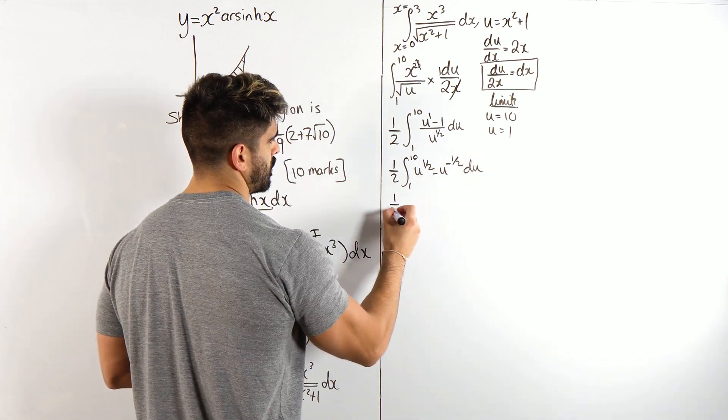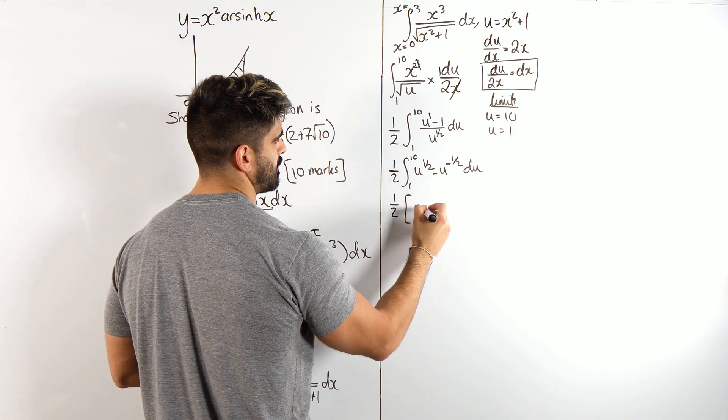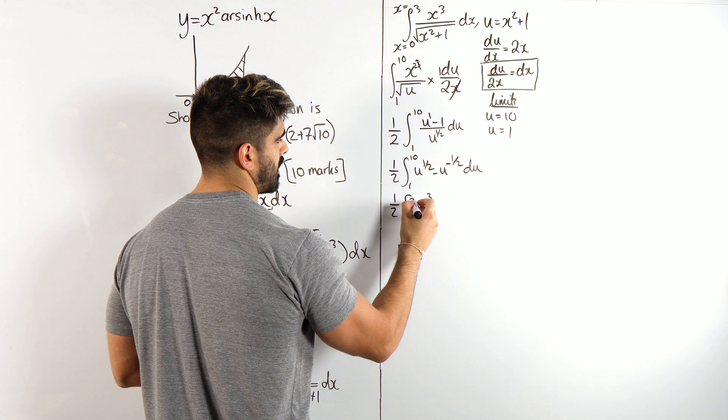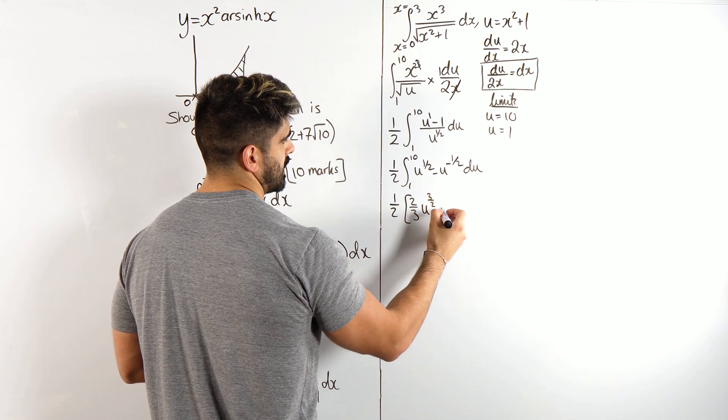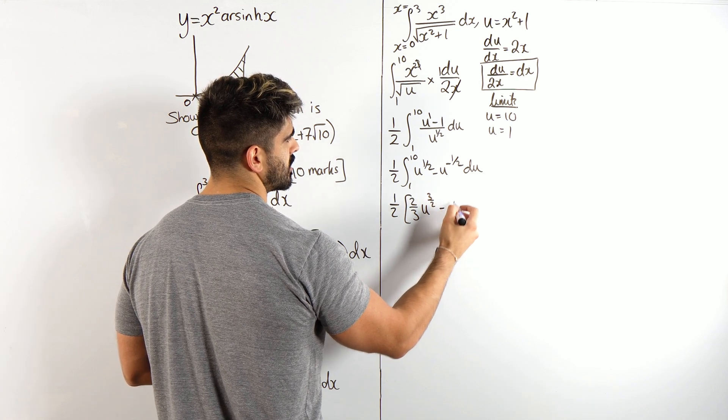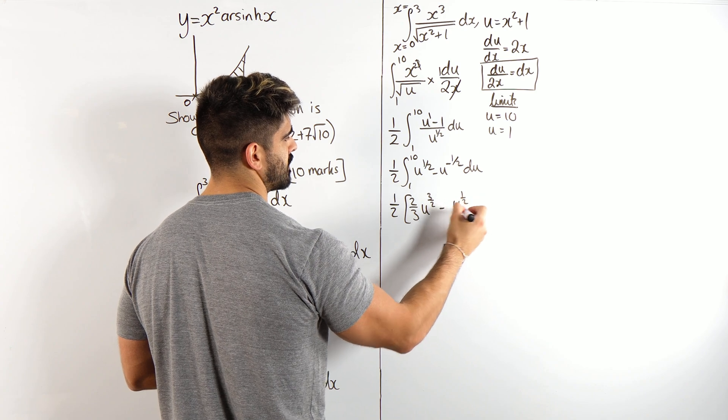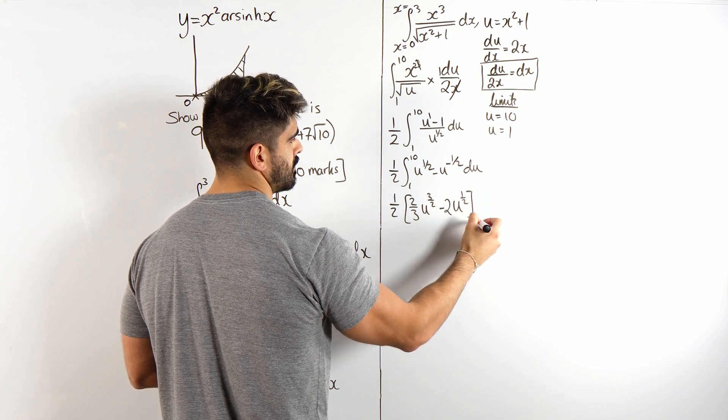So, integrating that is super simple, we have a half, add 1 to the power, be u to the 3 over 2, divide by that is 2 thirds, minus, add 1 to the power is a half, divide by that is 2, between 1 and 10.